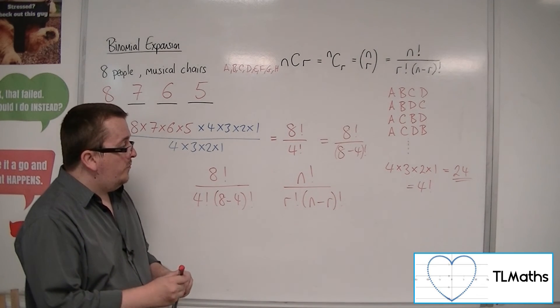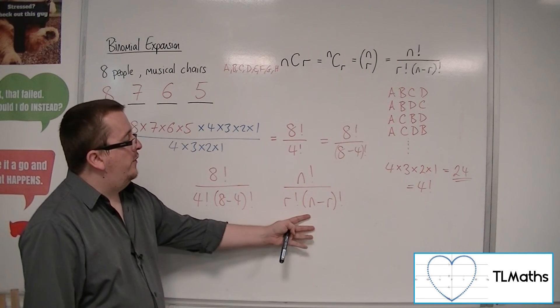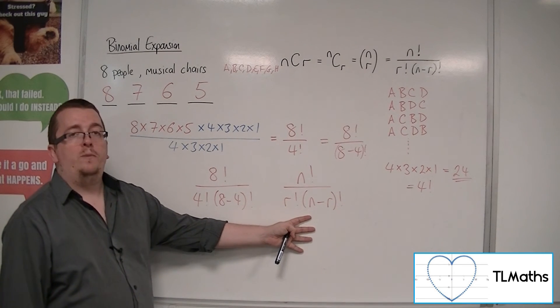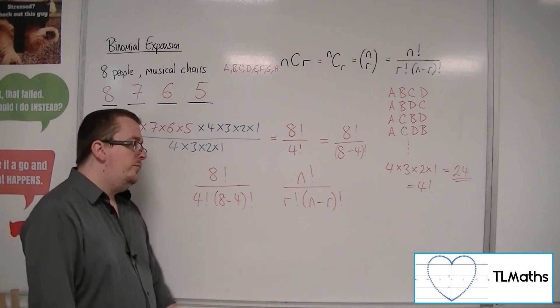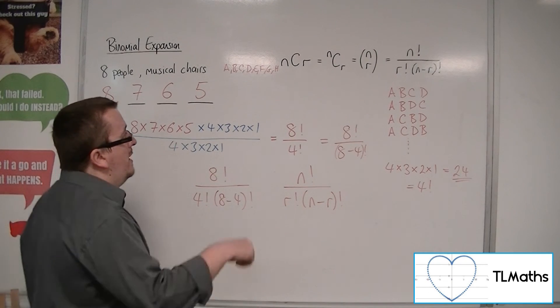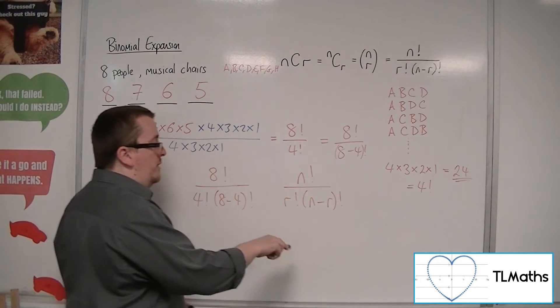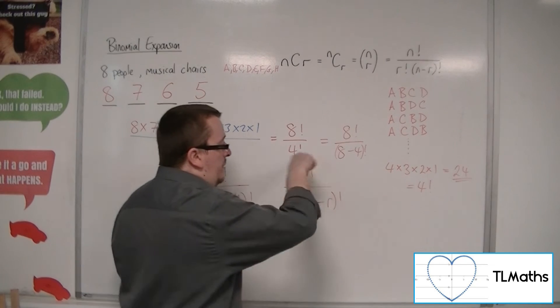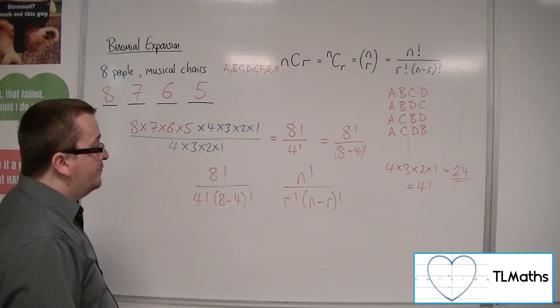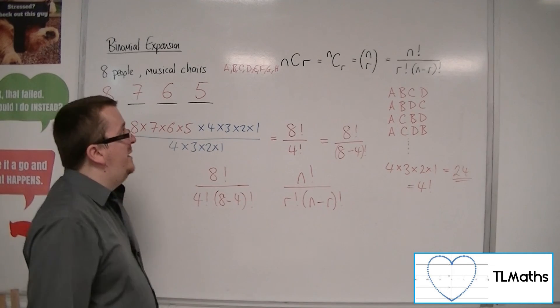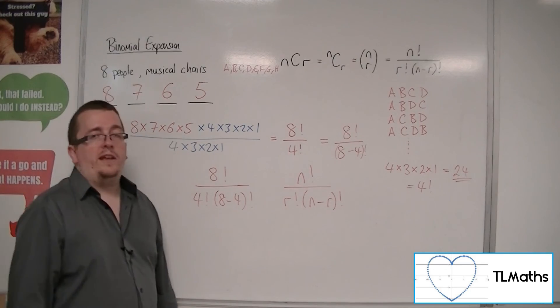And this is where this NCR formula is coming from. And this is linking directly into the Pascal's triangle because this gives you the elements of Pascal's triangle that you want. And that is what we're going to be using within binomial expansion.